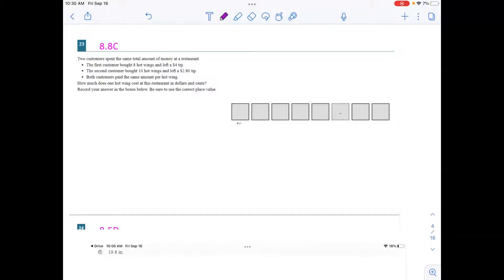Two customers spent the same total amount of money at a restaurant. The first customer bought 8 wings and left a $4 tip. The second customer bought 10 wings and left a $2.80 tip. Both customers paid the same amount per wing. How much does one hot wing cost at this restaurant in dollars and cents? First things first, just kind of visualizing this problem. What do we know? We know that there's two customers. There's a first customer and then there's a second customer. The amount that they spent at the restaurant was the same. So I'm going to make those two equal.